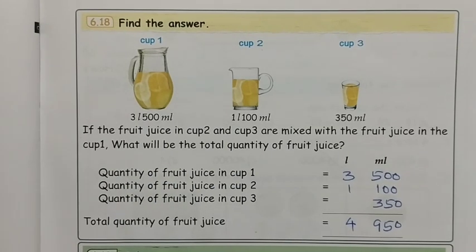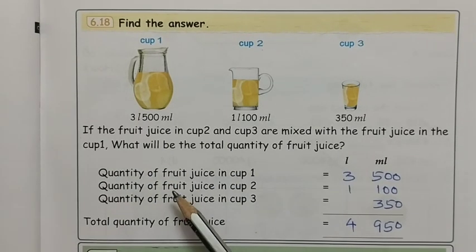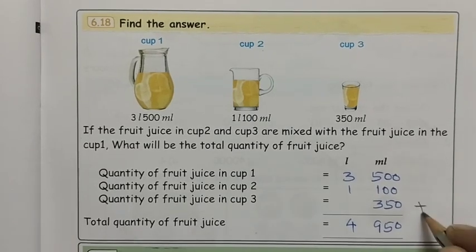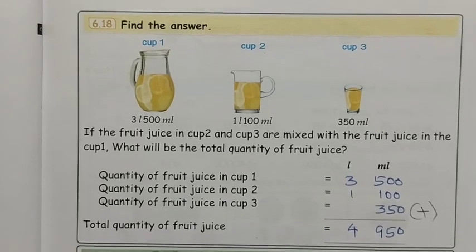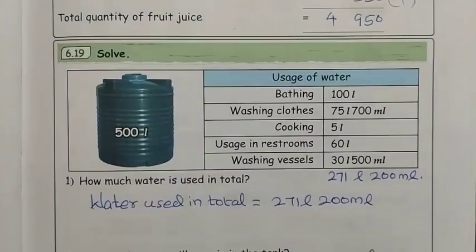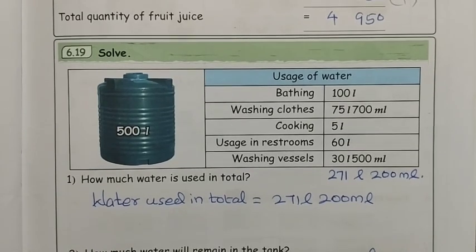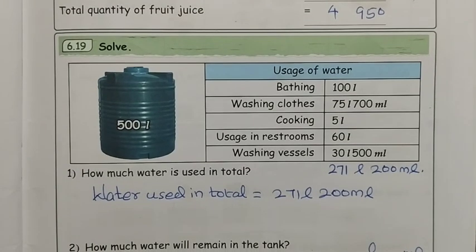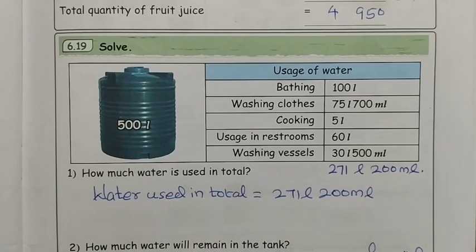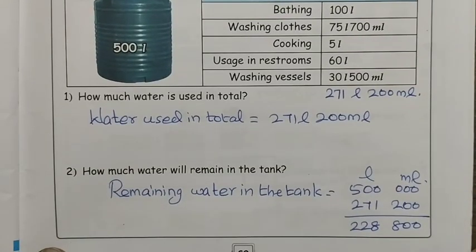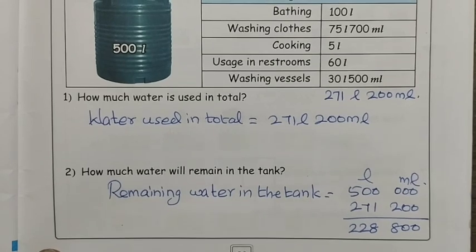Next one - quantity of juice for the first couple, second couple, third couple. Total quantity addition sum: 4 liters 950 milliliters. That is a tank of 500 liters - that is the product of the milk. Water usage in total: 271 liters 200 milliliters. How much water will remain in the tank? Subtract - answer is 228 liters 800 milliliters.